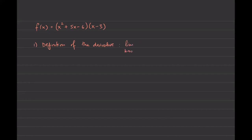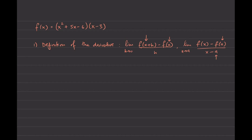The first is the limit as h approaches 0 of f of x plus h minus f of x, all over h. The other limit is the limit as x approaches a of f of x minus f of a, all over x minus a. When we find derivatives at a particular point, the x's get replaced in the first form, and the a gets replaced in the second. If you're finding just the derivative of a function generally, nothing is being plugged in. But if asked to find the derivative at a point, you need to know what is being substituted.